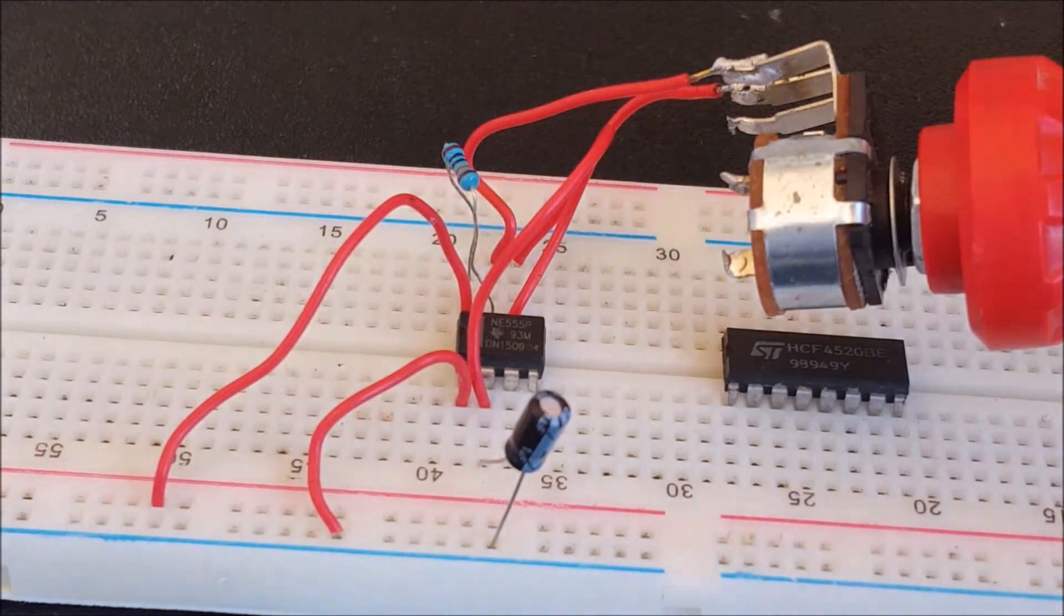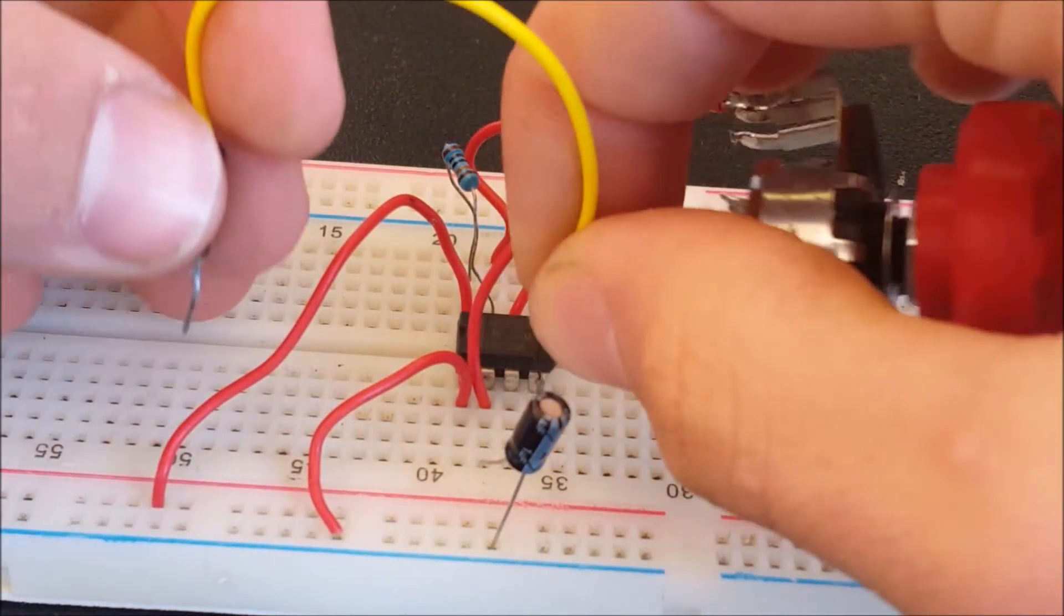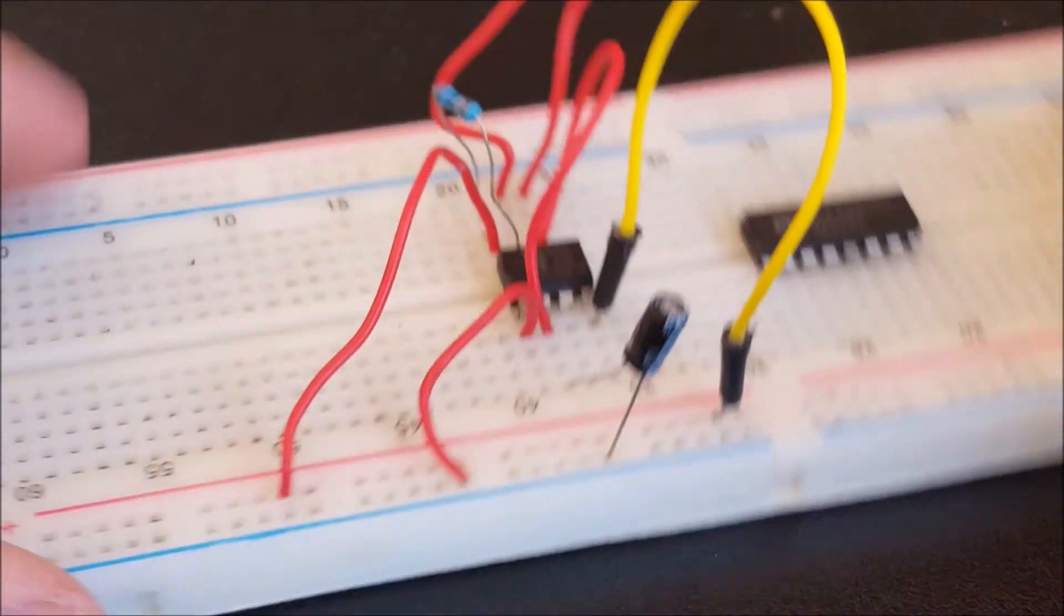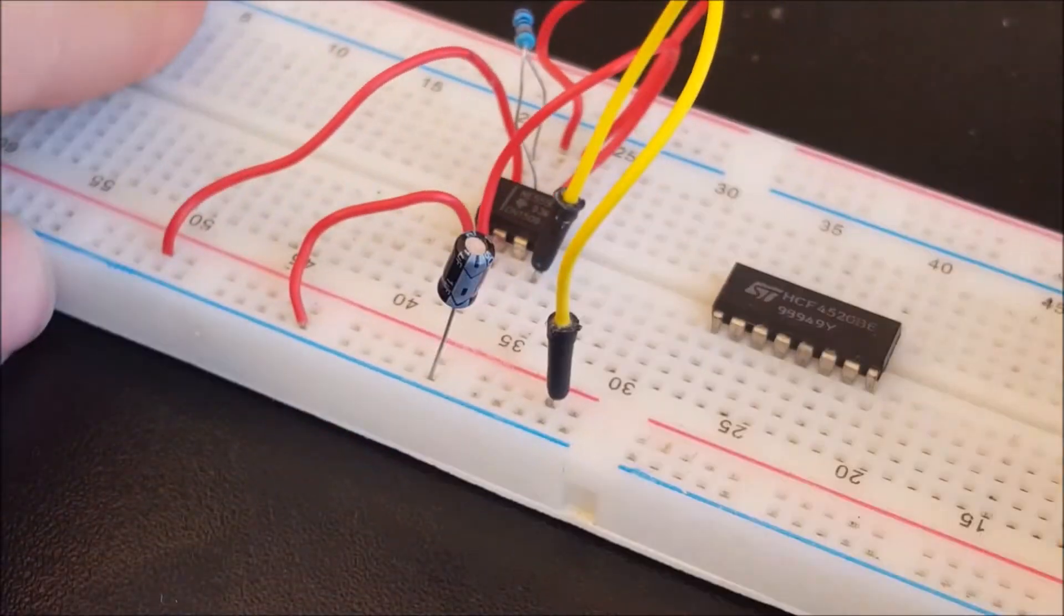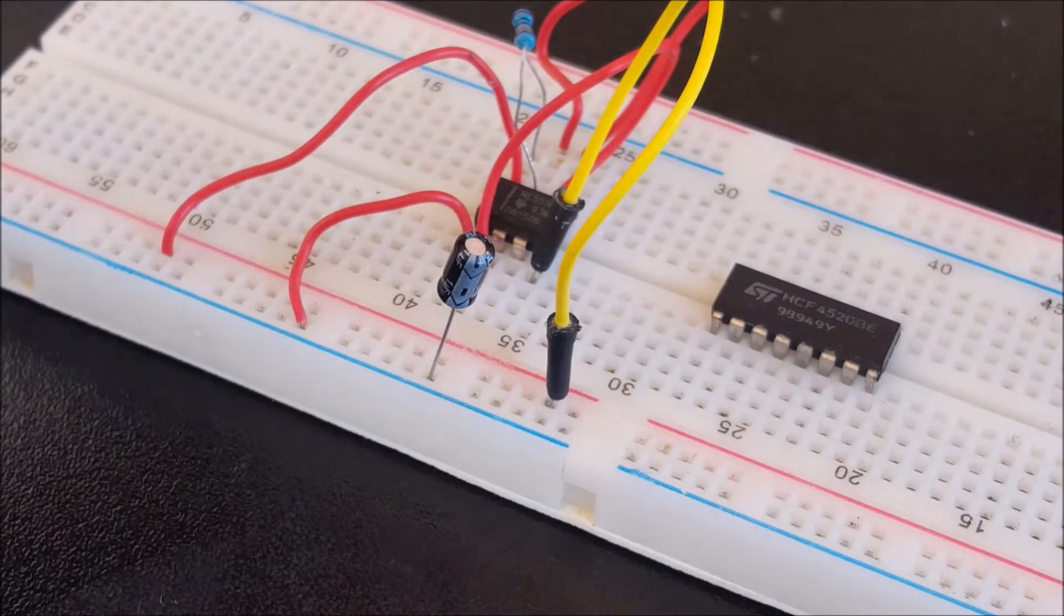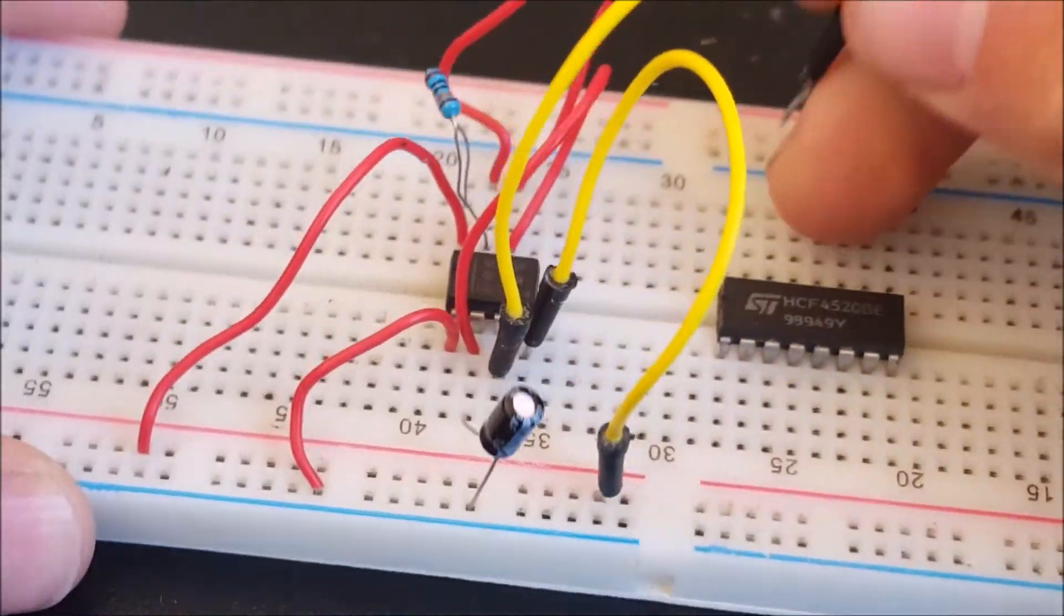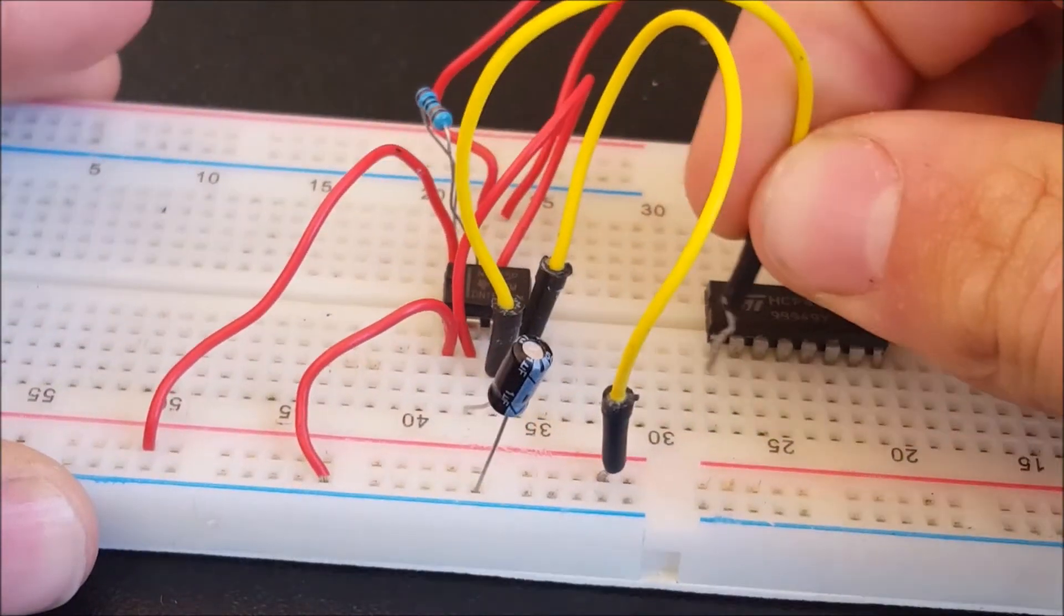Now we are going to need to connect pin 4 to the positive rail. So just like that, our timer circuit is complete. So now let's hook up a jumper wire from pin 3, which is the output of the timer, to pin 1 of the 4520 IC.